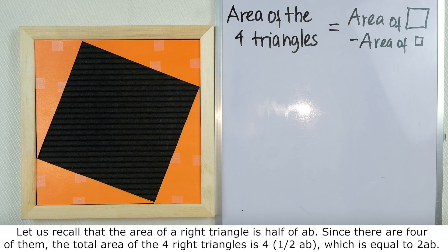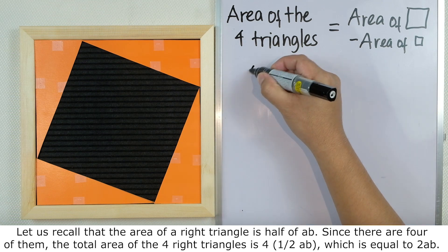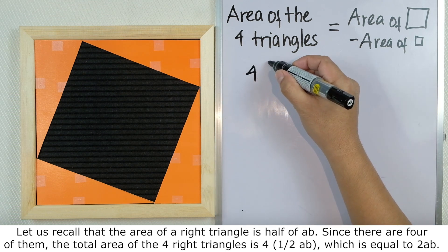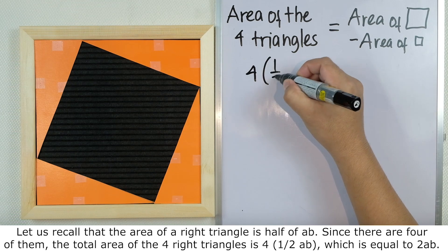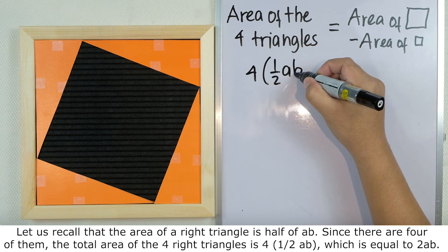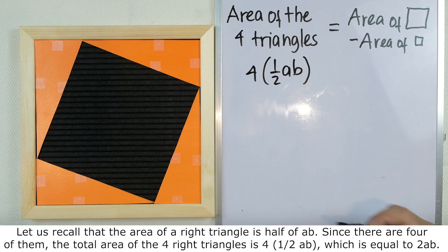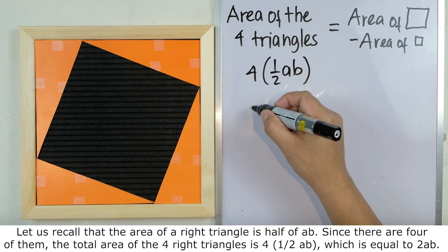the total area of the four right triangles is four times one-half ab, which is equal to 2ab.